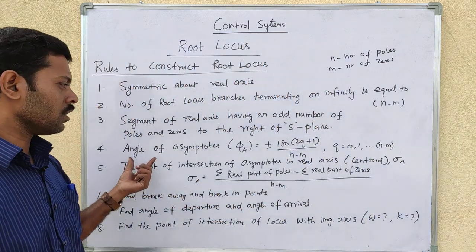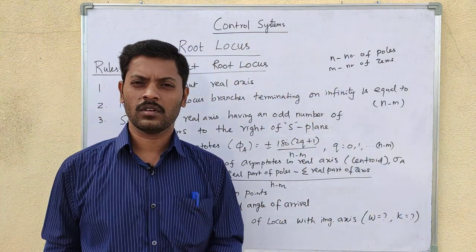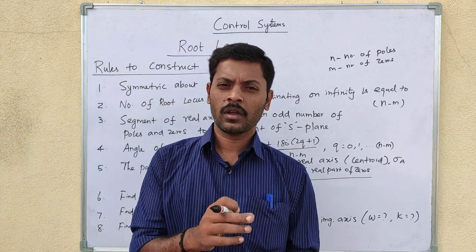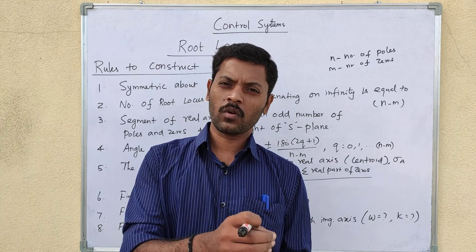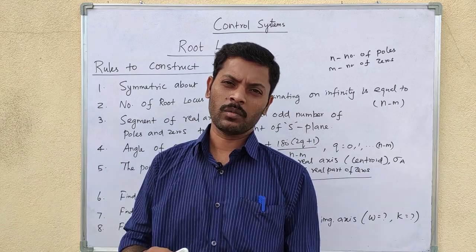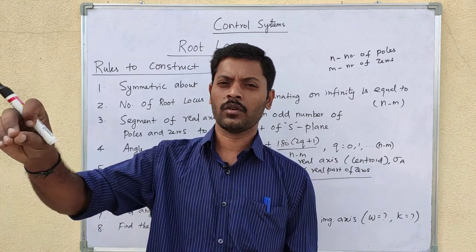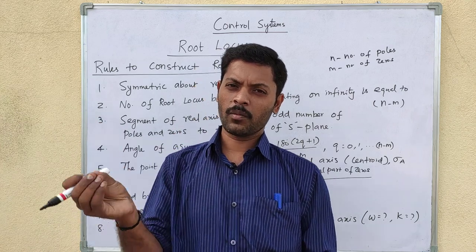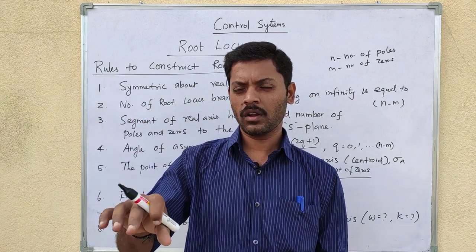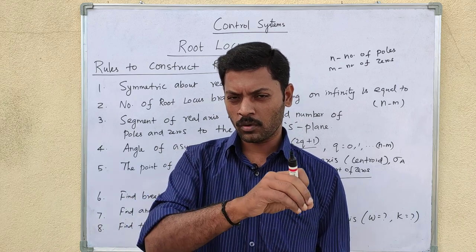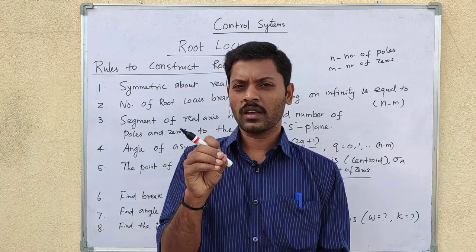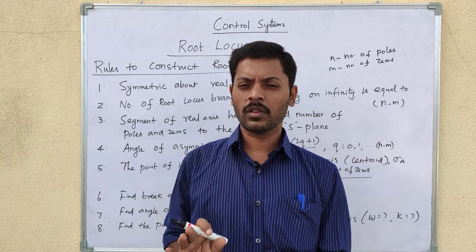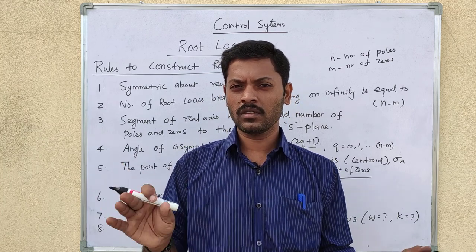The fourth rule is the asymptotes angle. Asymptotes are used for the root locus branches that go to infinity. The asymptote is infinite, and the asymptote intersects the real axis at a specific point.